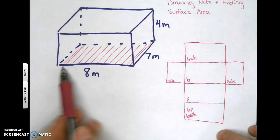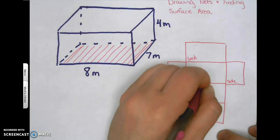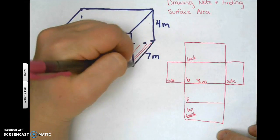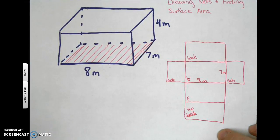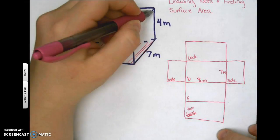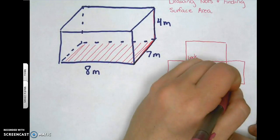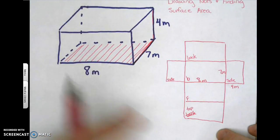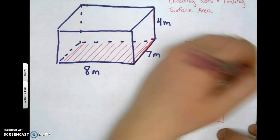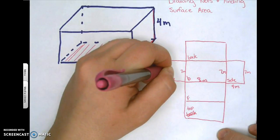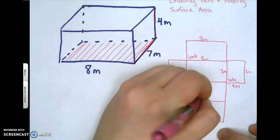Start by labeling the base. Across is eight meters, so label that as eight. The side length of that rectangle is seven, so label that as seven. Now go to the side — the side lengths are seven and four. With those labeled, you can fill in a majority of the net: the vertical edges are all seven meters, and the horizontal edges are all eight meters.